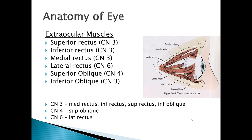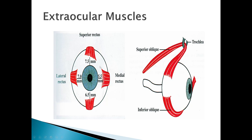Cranial nerves are super important for ophthalmology. The superior rectus muscle is controlled by cranial nerve 3 and moves the eye superiorly. The inferior rectus moves it inferiorly and is also CN3. The medial rectus is CN3 — here's your outlier: the lateral rectus is controlled by cranial nerve 6. So all rectus muscles are CN3 except the lateral, which is CN6. The superior oblique is controlled by CN4, and the inferior oblique by CN3.